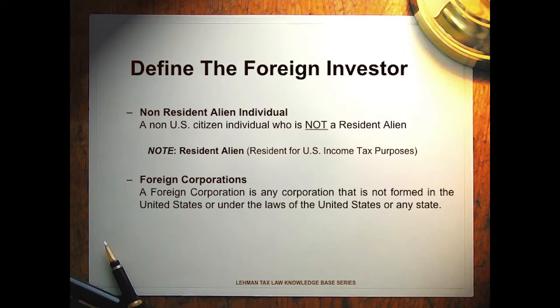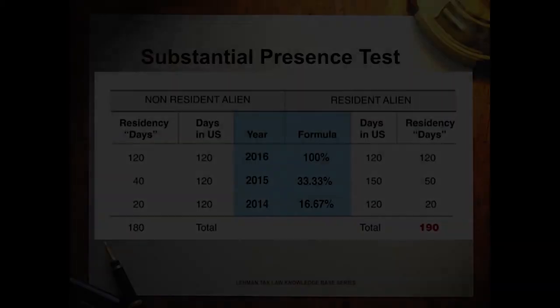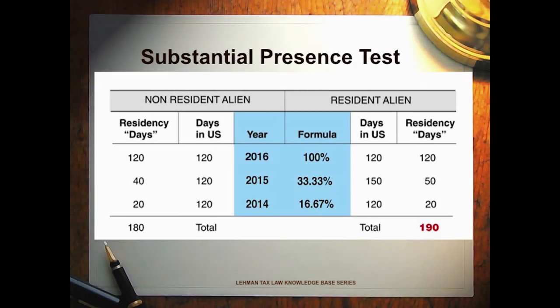We're now going to see how a non-resident alien becomes a U.S. taxpayer simply by virtue of being in the United States too long. We'll also see some of the exceptions to this. The principal way a non-resident alien becomes a U.S. taxpayer is if they're spending too much time in the United States.